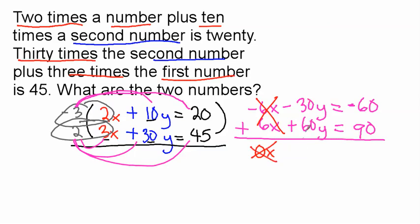Negative 30y plus positive 60y, we have to find the difference between the two, because we're adding a negative and a positive. And the difference is 30, and the positive is bigger. So it's positive 30y equals 90.